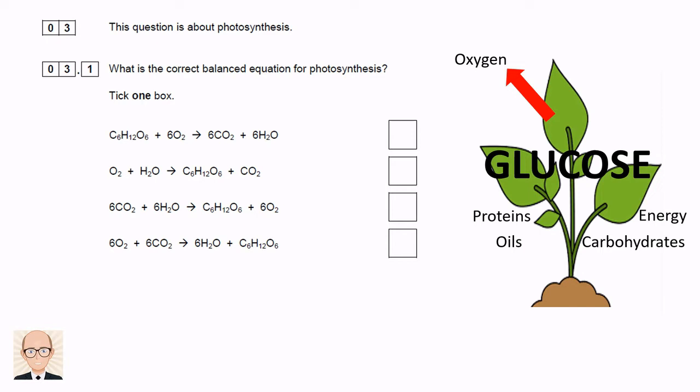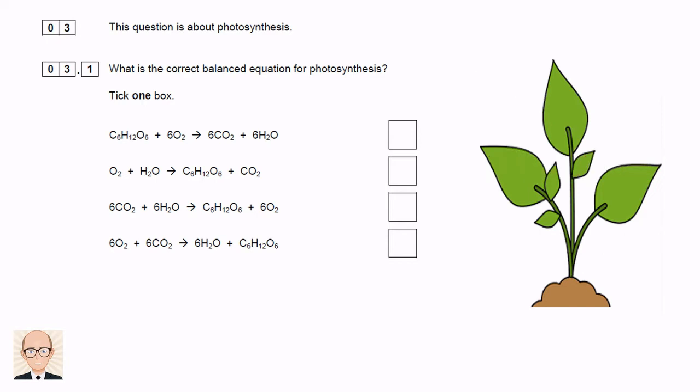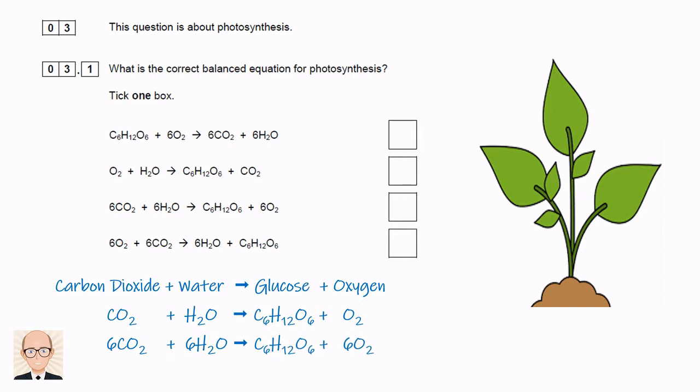So overall the process can be summarised as carbon dioxide and water being converted into glucose and oxygen. The formulae can be written as CO2 plus H2O reacting to form C6H12O6 plus O2. When balanced we can see that we need 6CO2, 6H2O, 6O2 and therefore we can tick the third box.